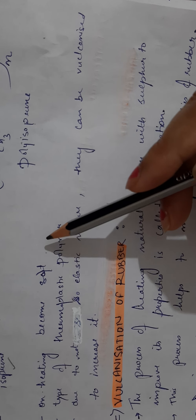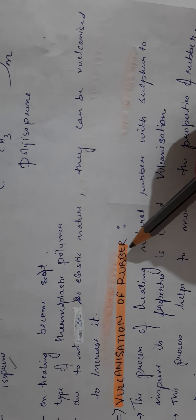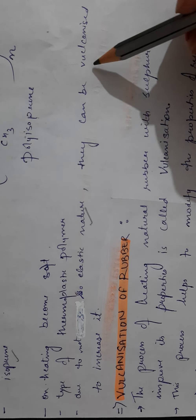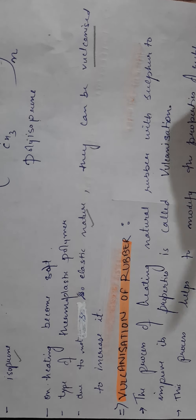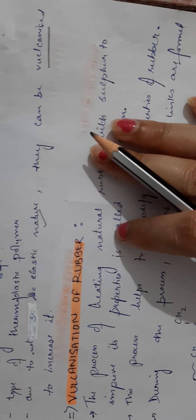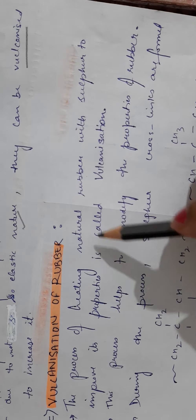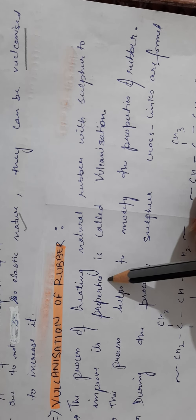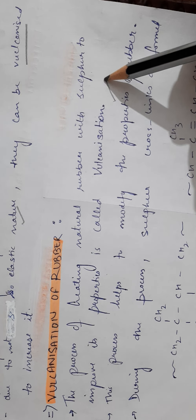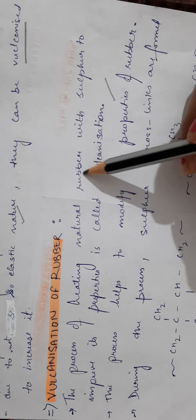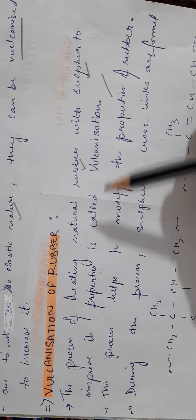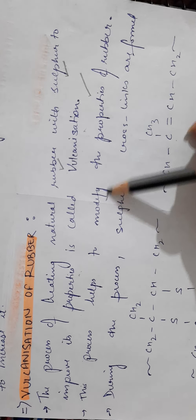Natural rubber, when heated, becomes soft. It behaves like a thermoplastic polymer because its elastic nature is not very good. To improve its properties, we perform vulcanization. Vulcanization of rubber is a process of heating natural rubber with sulfur to improve its properties.